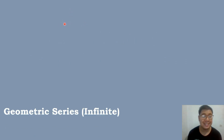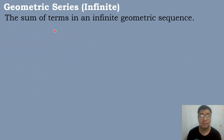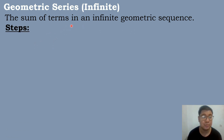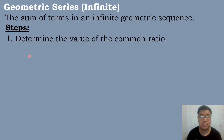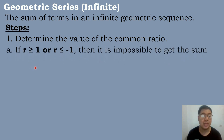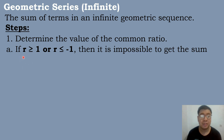When we say geometric series, it is the sum of terms in a geometric sequence. In finding the infinite geometric series, we have the following steps. The first step is to determine the value of the common ratio. After determining the value of the common ratio, we have two conditions to consider. The first one is if the common ratio is greater than or equal to 1, or the common ratio is less than or equal to negative 1.